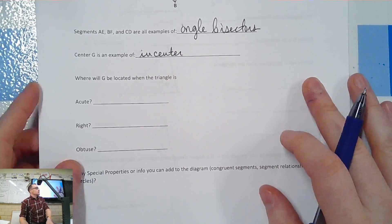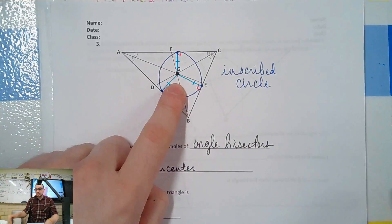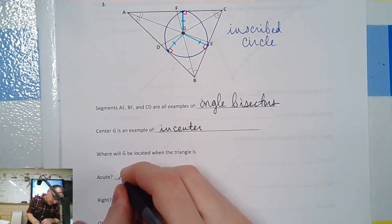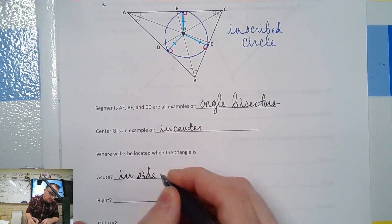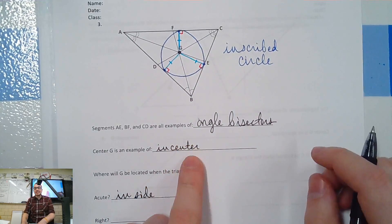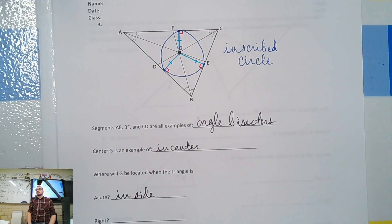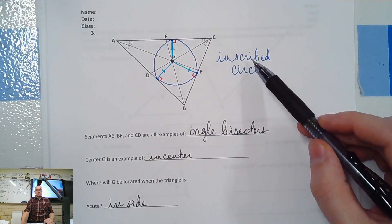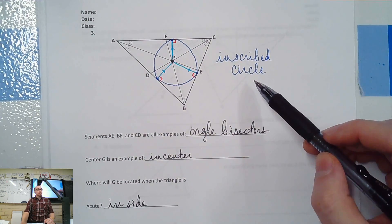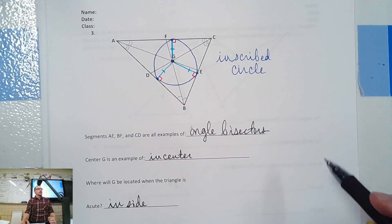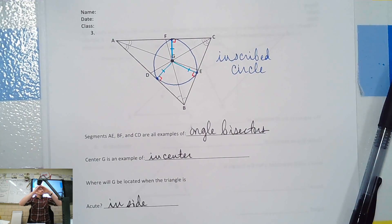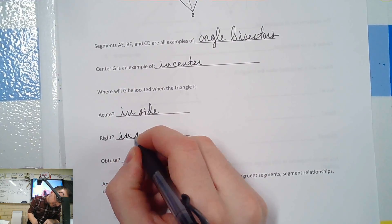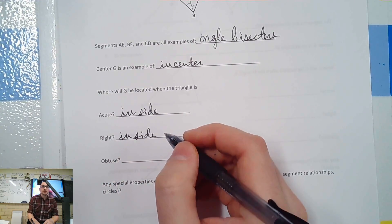Acute and obtuse — when it's an acute triangle it's obviously inside. Now why do we call it the incenter? It's the center of an inscribed circle. So it's the center of a circle that's inside the triangle. If the circle is always inside the triangle, will the center of that circle ever be outside the triangle? No — it's always inside, because it's an inscribed circle.